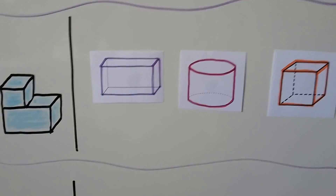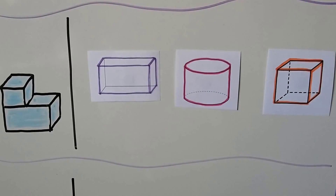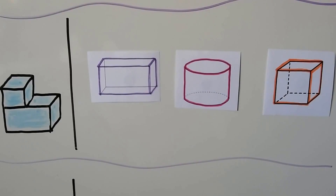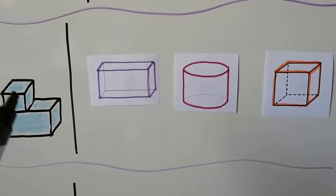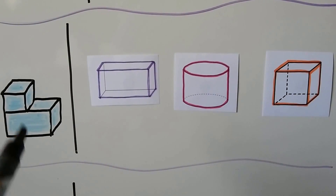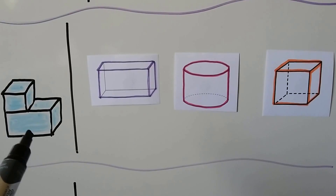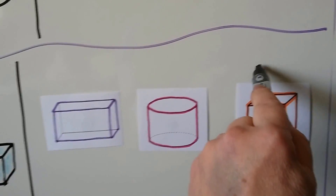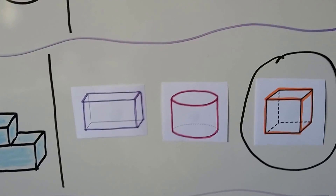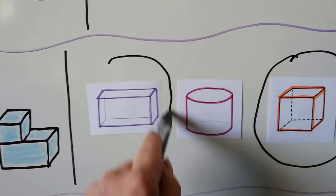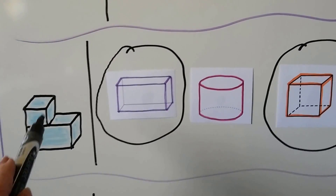What about this one? Which two shapes do we need to make this combined shape? Do you see the shapes that are combined? We have a cube and a rectangular prism — so we need a cube and a rectangular prism to make that shape.